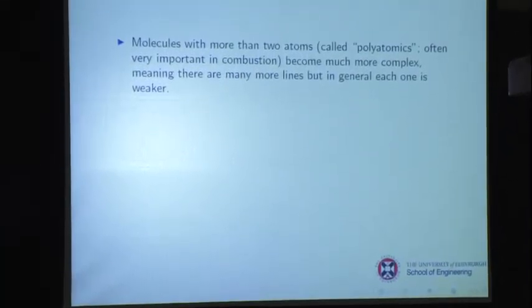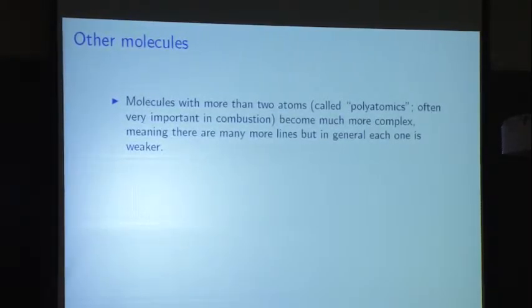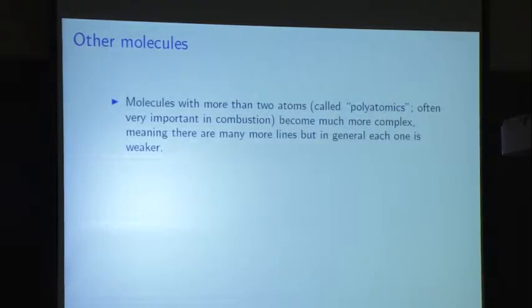Molecules with more than two atoms — polyatomics — are very important in combustion. The trouble with a polyatomic like a triatomic is that they're significantly weaker because they have many more vibrational and rotational lines, which means Boltzmann statistics will hurt you. The populations in each line are down by one or two orders of magnitude, killing the signal. Only a few triatomics have been successfully seen with laser techniques. It works better with absorption looking across a significant line of sight. For laser-induced fluorescence it's pretty tough — it depends on the molecule.